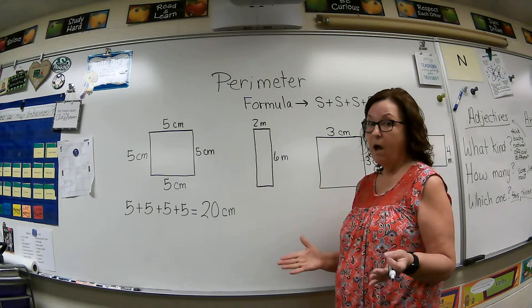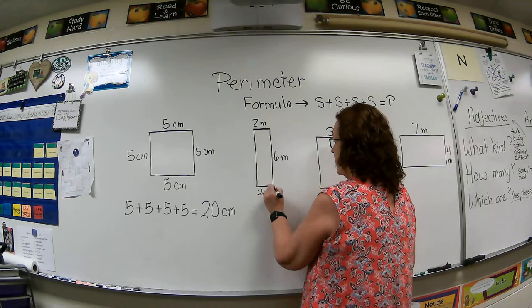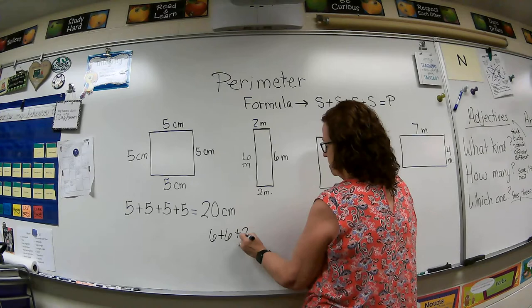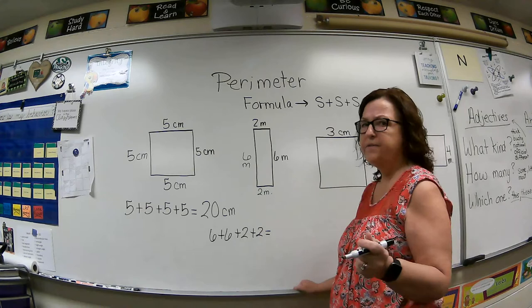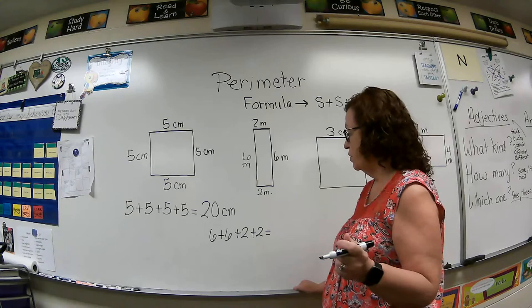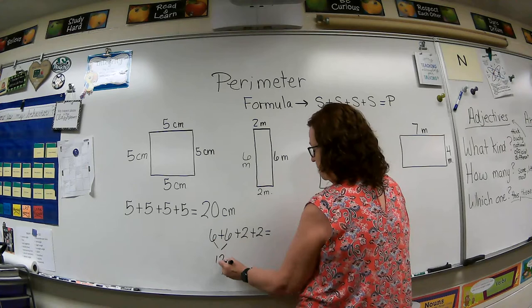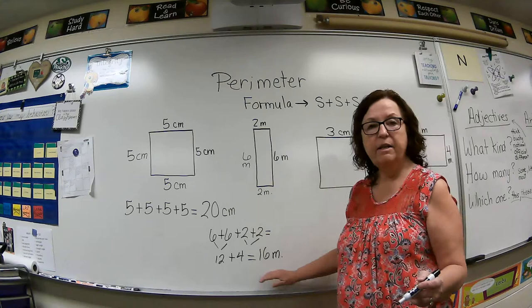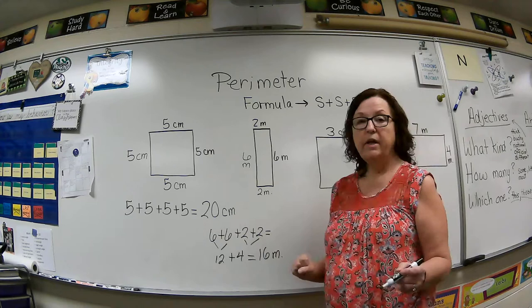Now remember, opposite sides are the same size. So that means that this down here is two meters. And this over on this side is six meters. So we're going to add up, let's see, let's do six plus six plus two plus two. And I know some of you can do this in your head. And that's fine. But you should probably write down your equation somewhere on your worksheet when you do it. So six plus six is twelve. And two plus two is four. So twelve plus four is sixteen. So my perimeter is sixteen meters. Make sure you always put that unit that's being used after your number.